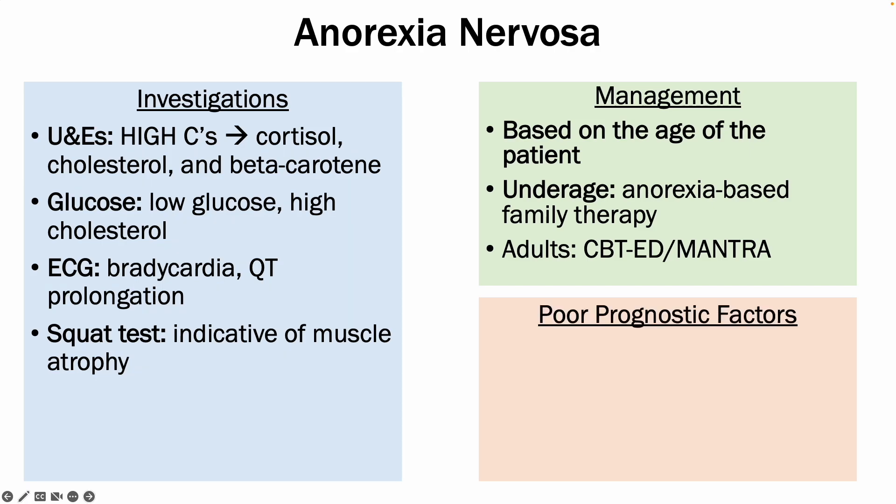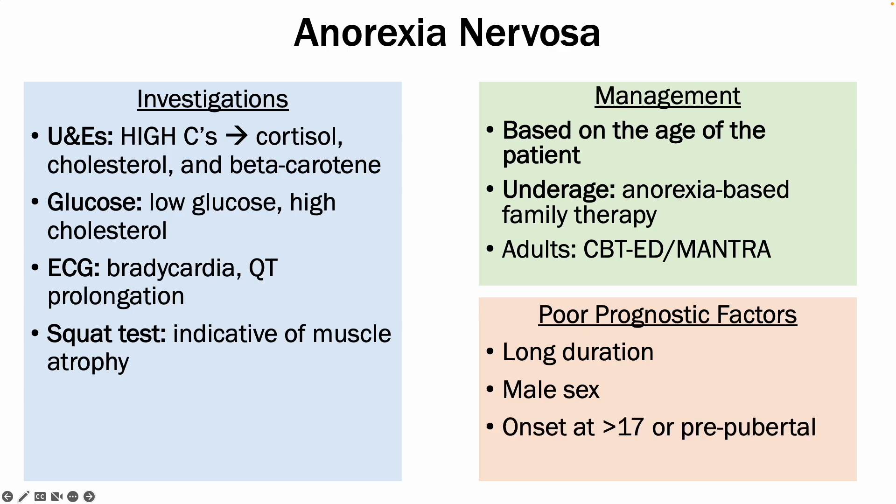There are poor prognostic factors associated with anorexia, and these include long duration of the disease, being male, and an onset at age 17 or pre-pubertally.